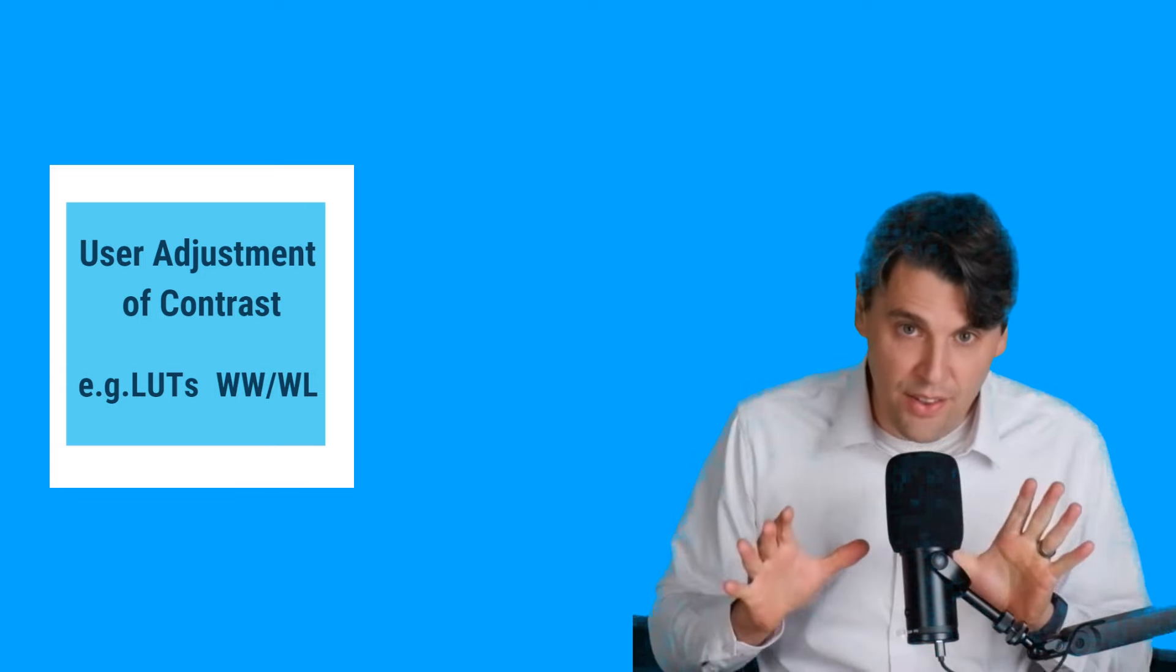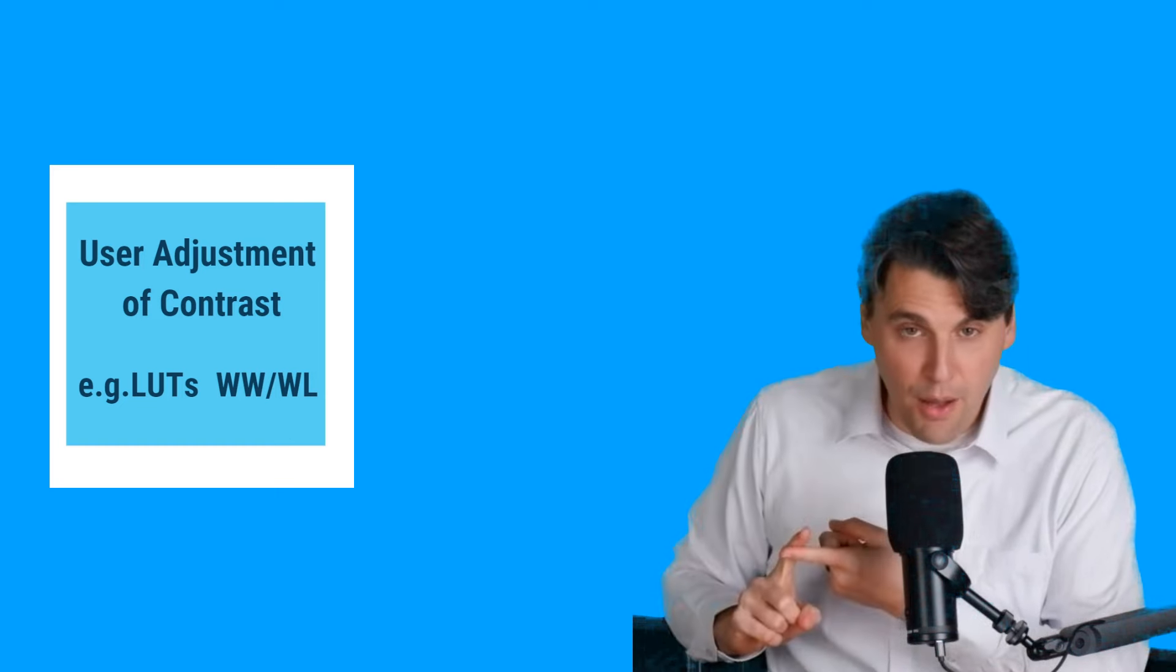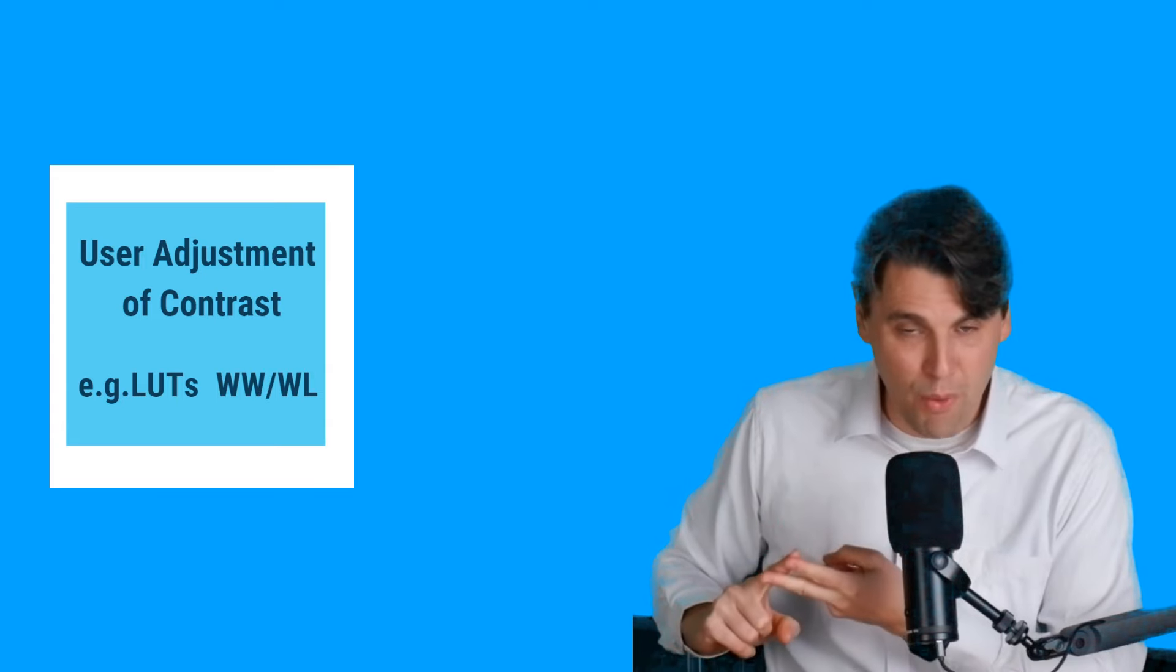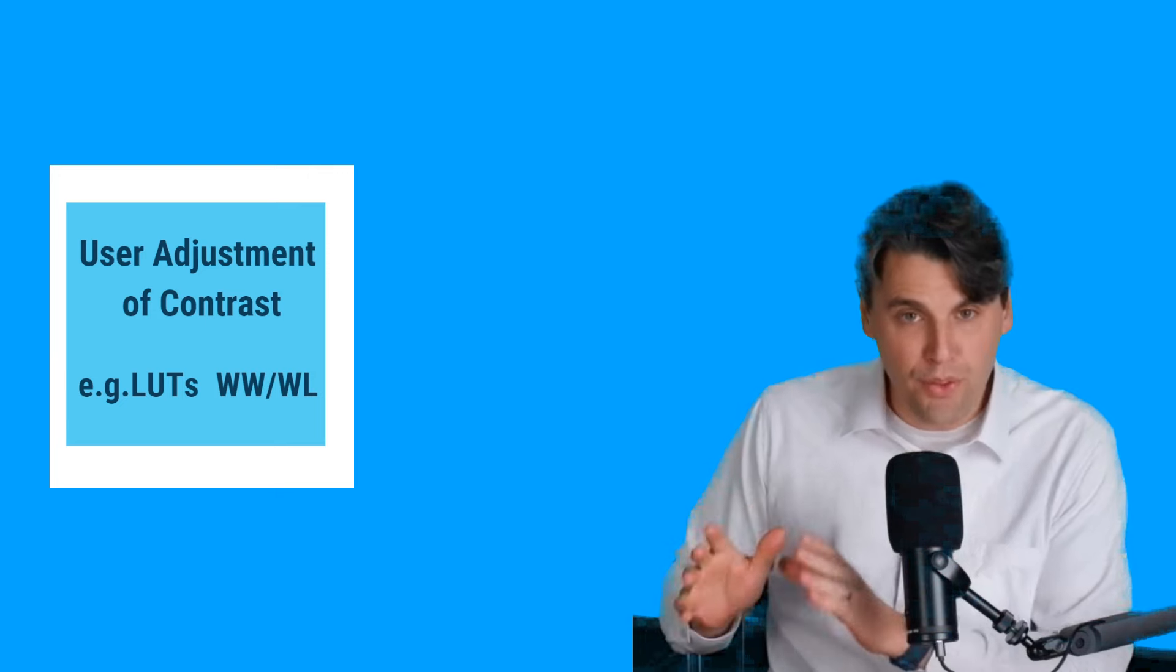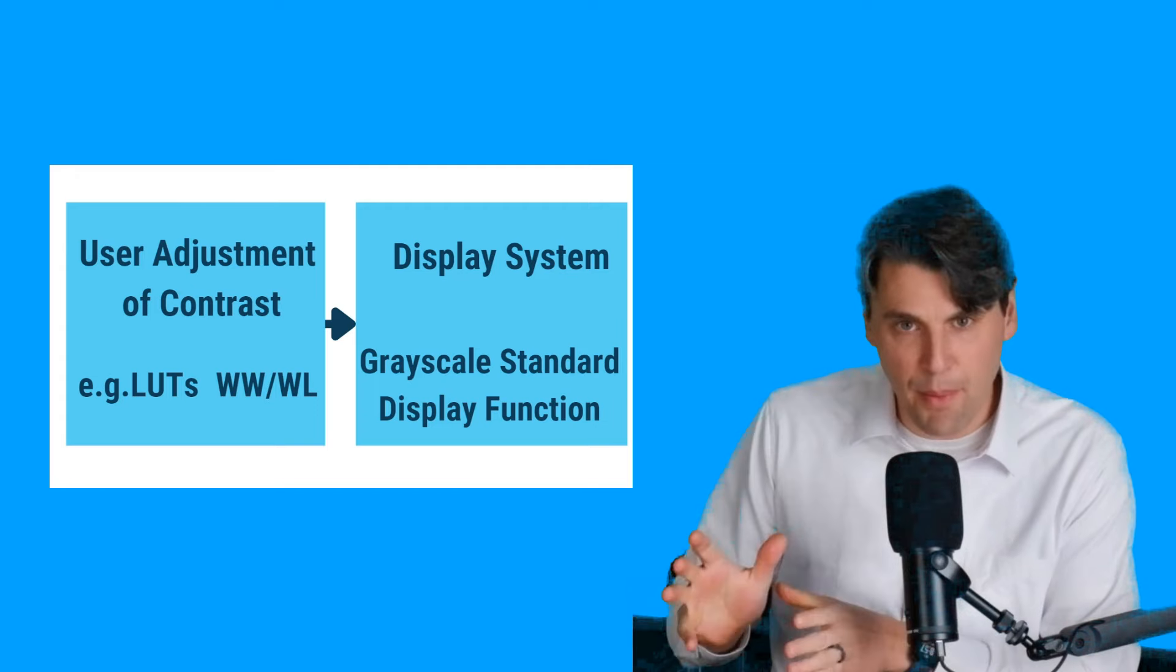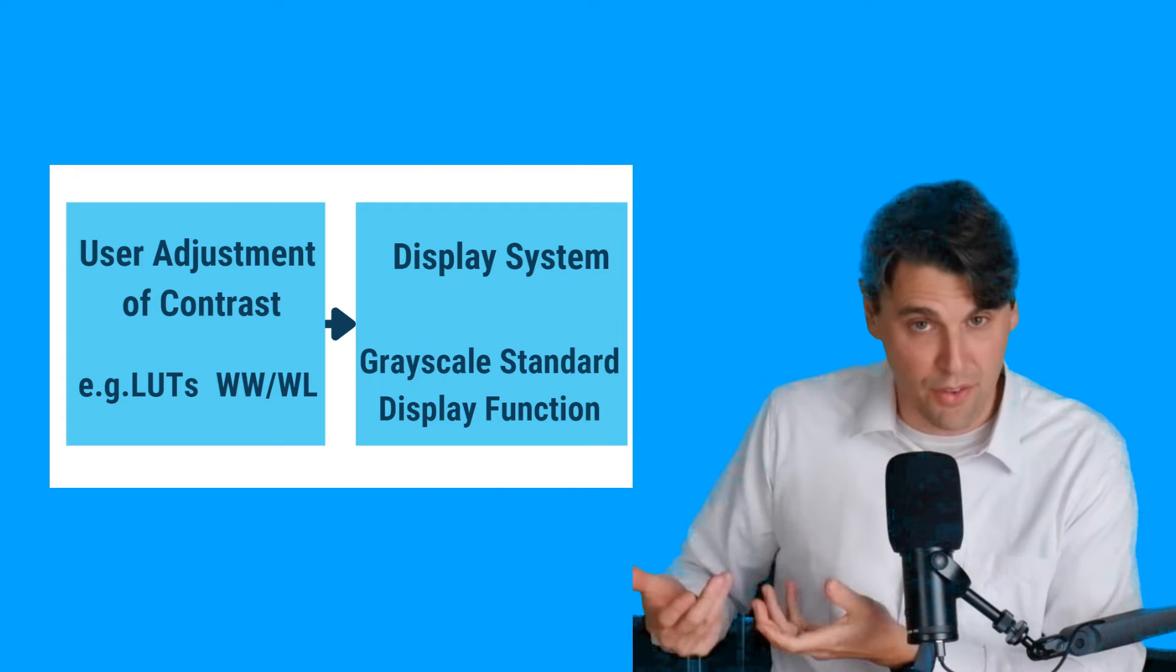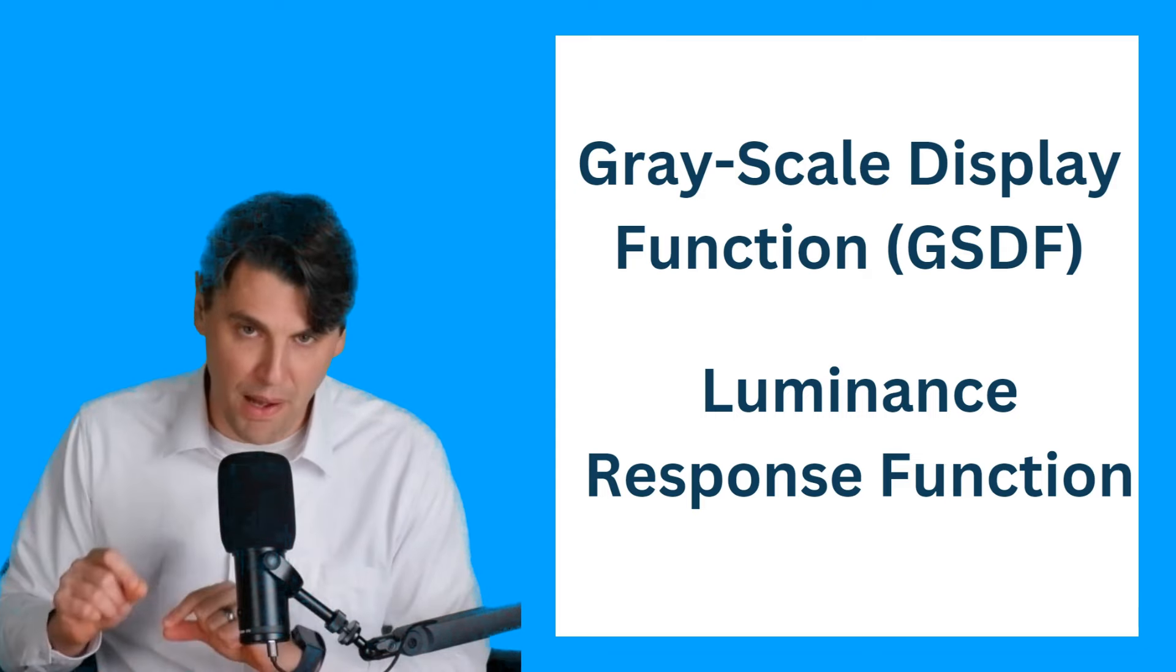The user can adjust the contrast in the image. They can do that with lookup tables. See our video on LUTs. They also can do that with window width and window leveling, changing the window width and window levels. Both of those things can be done on the display side. There's then a separate lookup, which actually maps to what's called the grayscale standard display function. We can also more generally call the luminance response function.